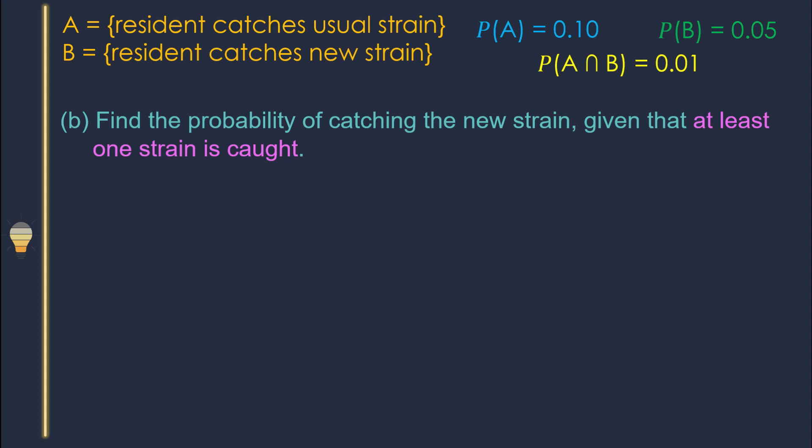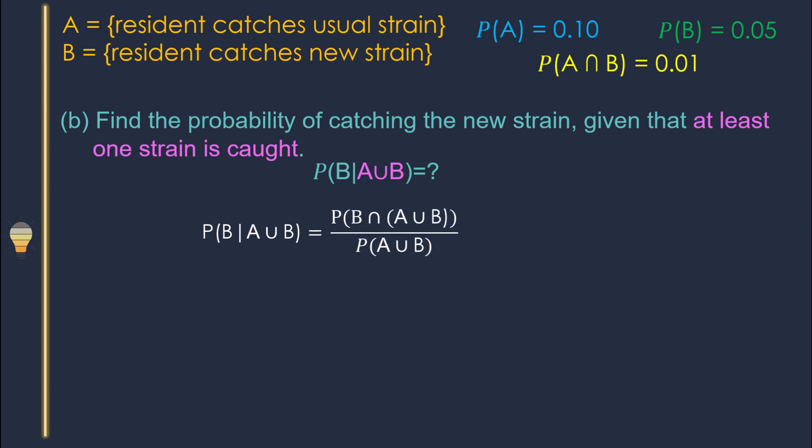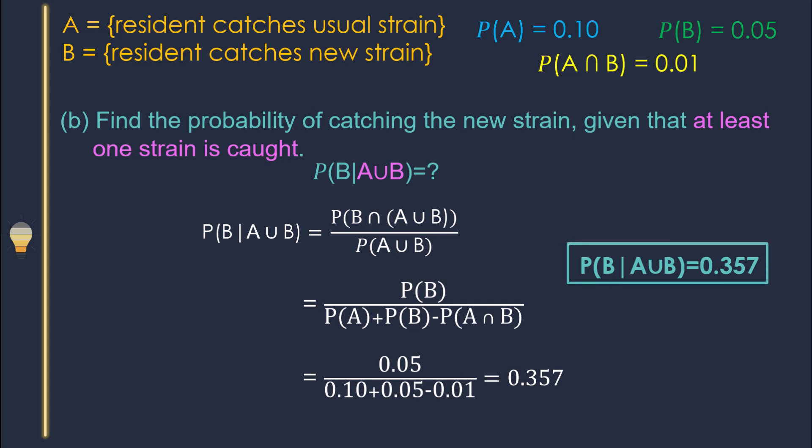Find the probability of catching the new strain — that is B — given that at least one strain is caught, meaning A union B. So we need P(B | A∪B). By definition, the top part is P(B intersection A∪B), which simplifies to P(B) — you can use a Venn diagram to understand this. For the bottom, P(A∪B) is not given directly, but we can find it: P(A∪B) = P(A) + P(B) − P(A∩B). Now plug in the numbers and get the answer.